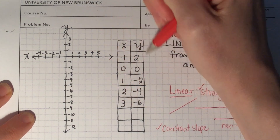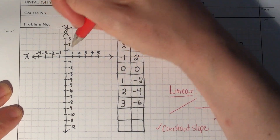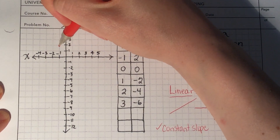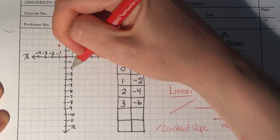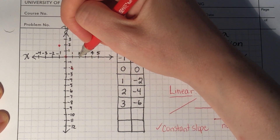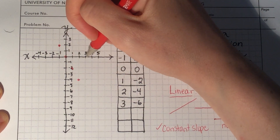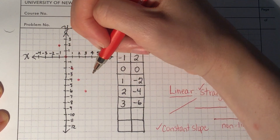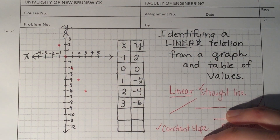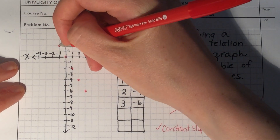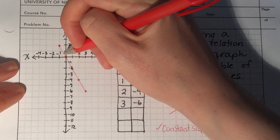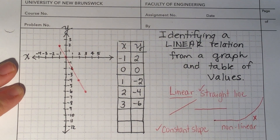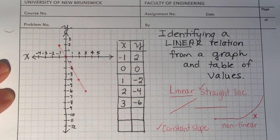So if we take a look at the graph, I'm going to quickly draw the line represented on my table of values. I have negative one and two as my first point, then zero comma zero, one and negative two, two and negative four, and three and negative six. So there's my line, and if I were to use a ruler it would make a nice straight line. Just by looking at the graph, we know that this is a linear relationship because it makes a straight line.